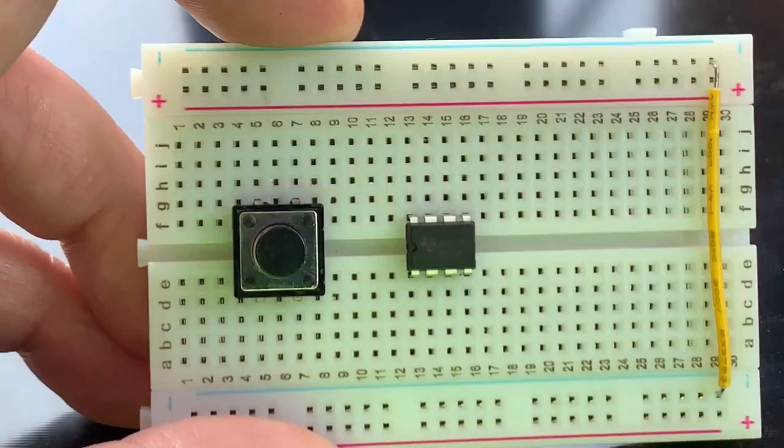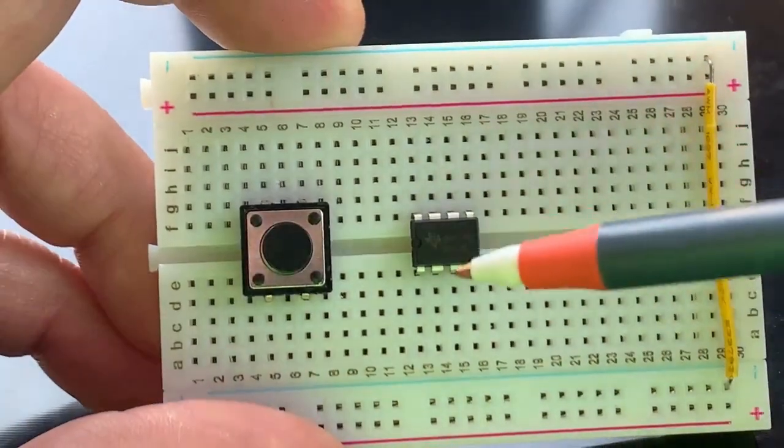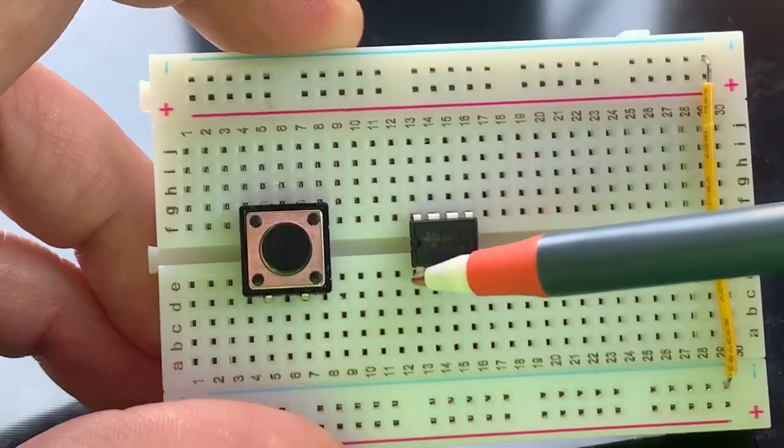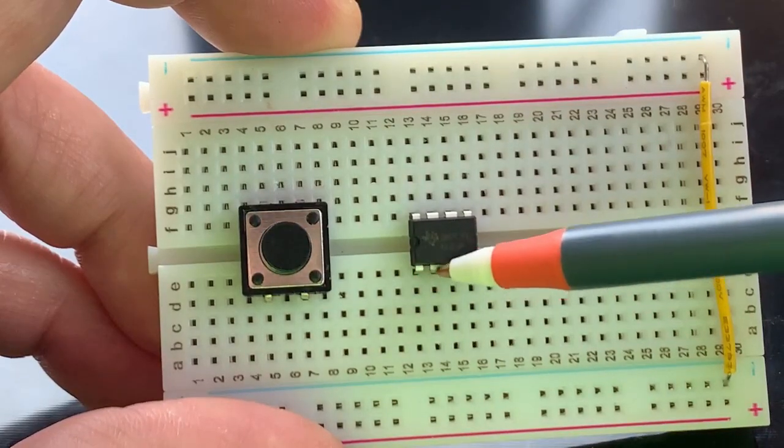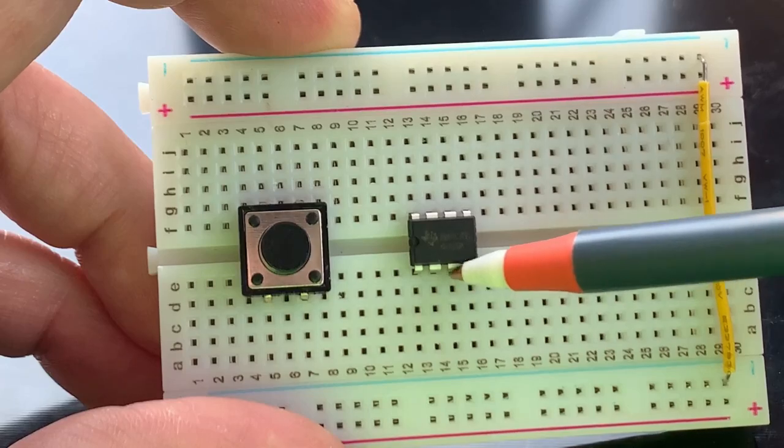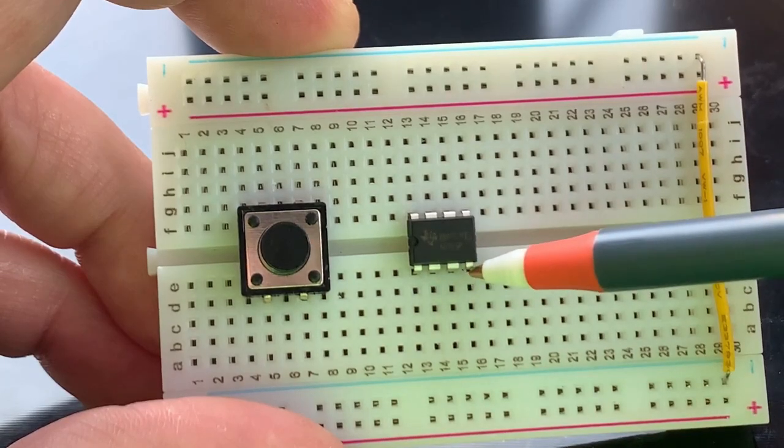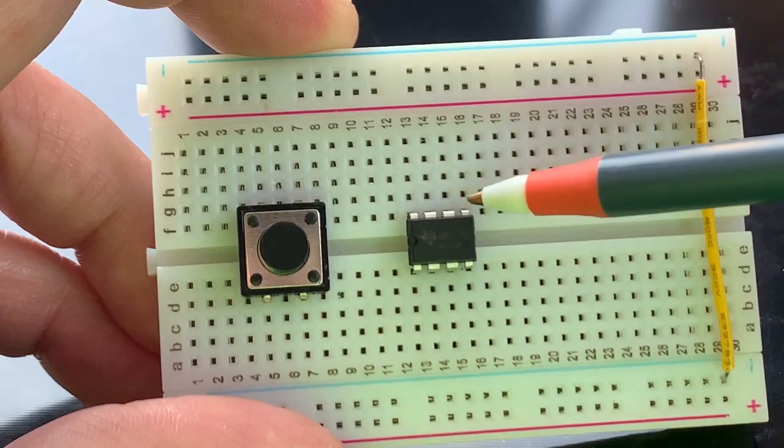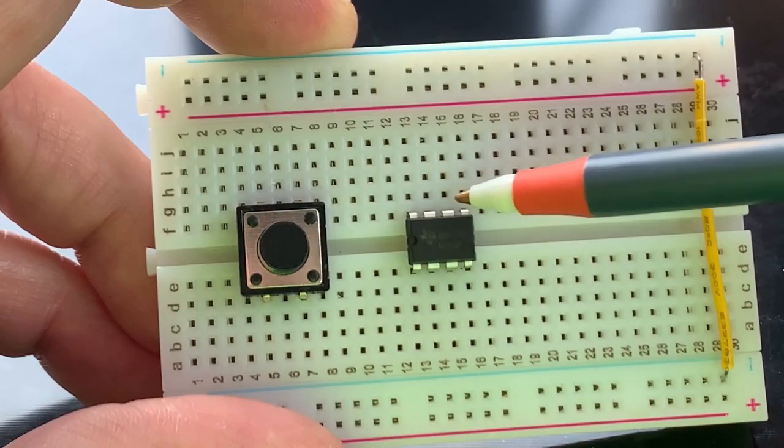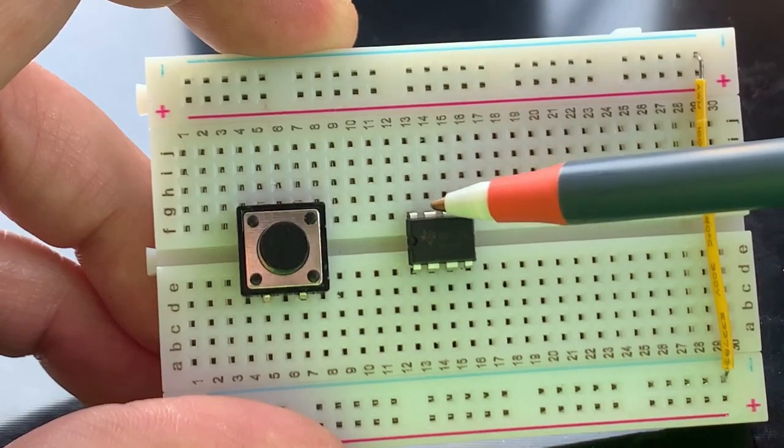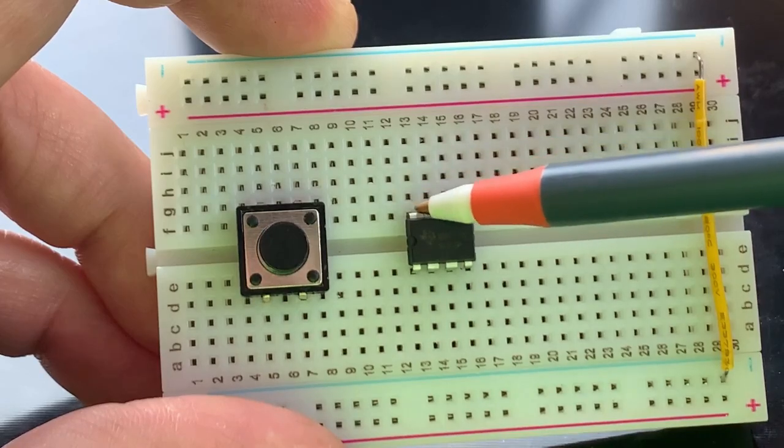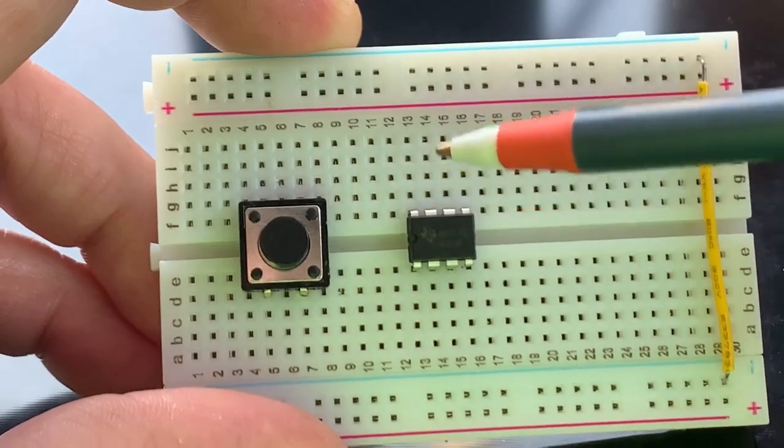So we've got the chip and the switch on the breadboard like that. Here's pin one down here, that's the ground pin. Pin two is the trigger pin. Pin three is the output pin. Pin four is the reset pin. And we start over here at pin five control. Six is threshold. Seven is discharge. And eight is the supply voltage or VCC.